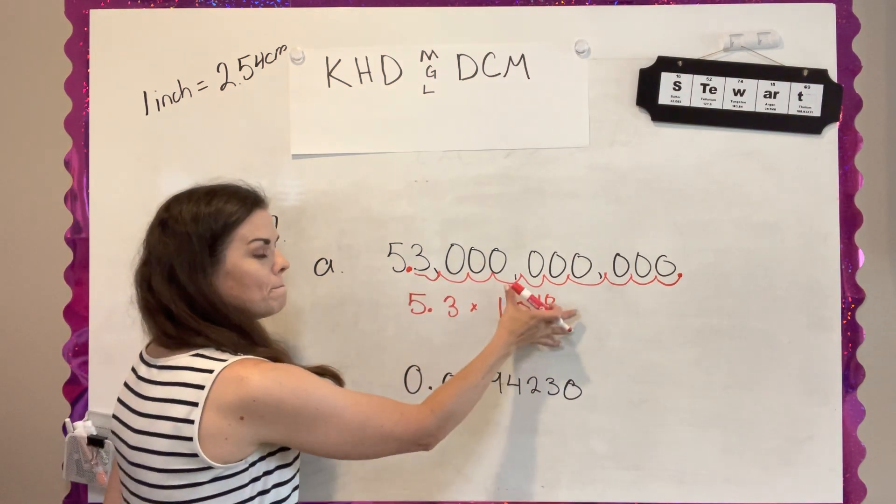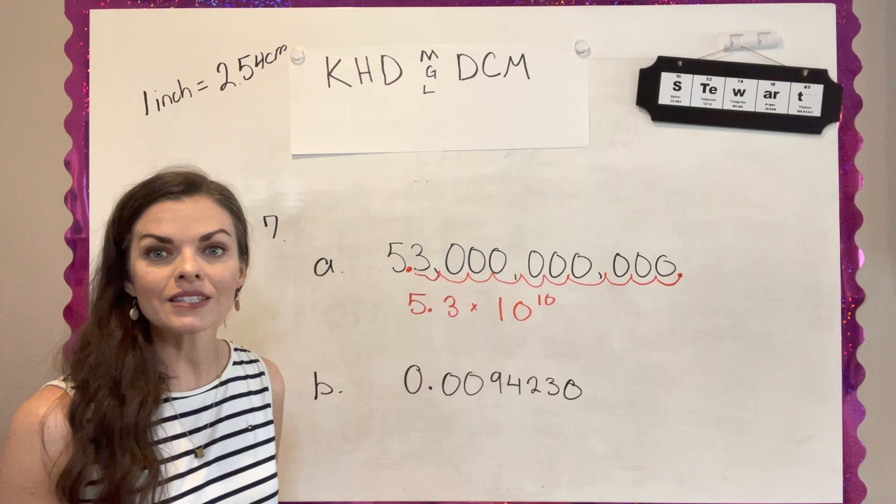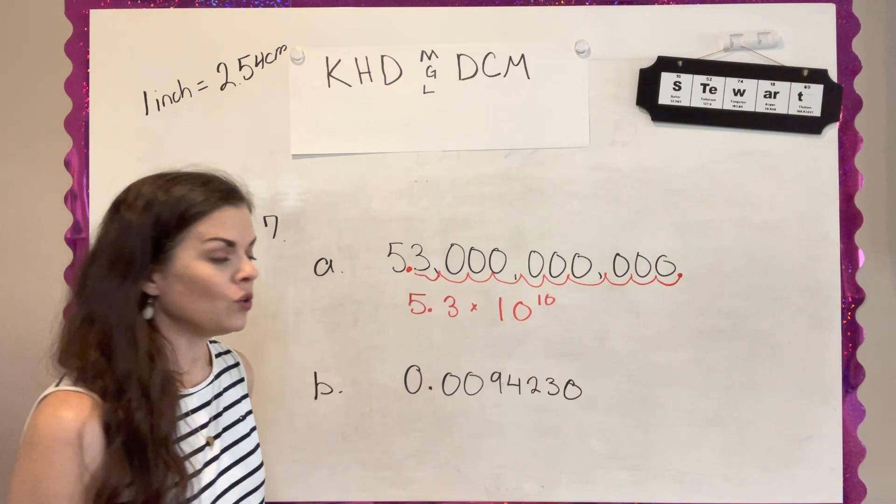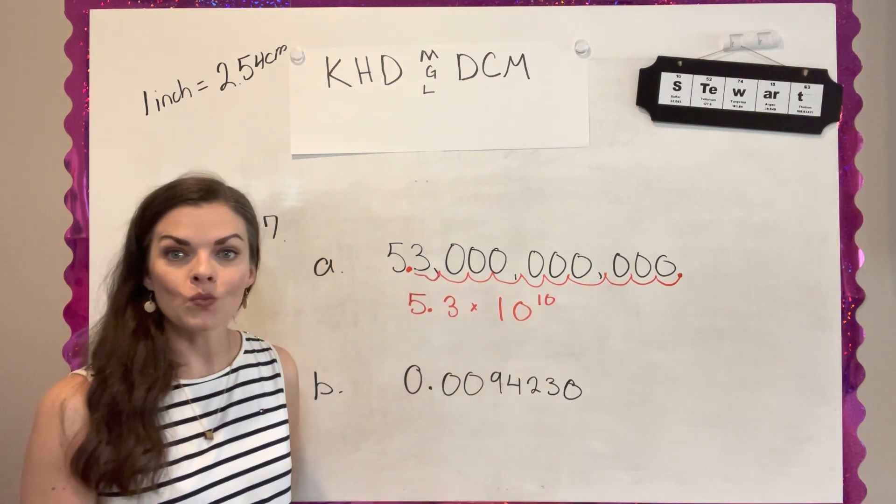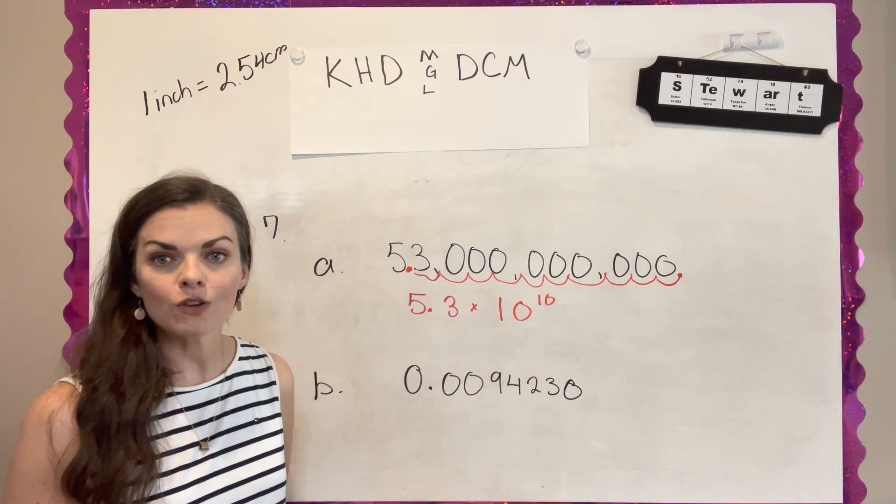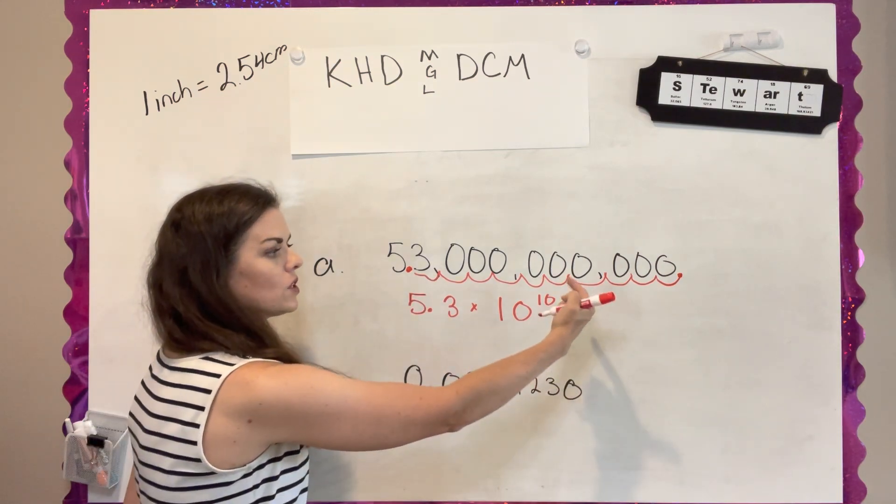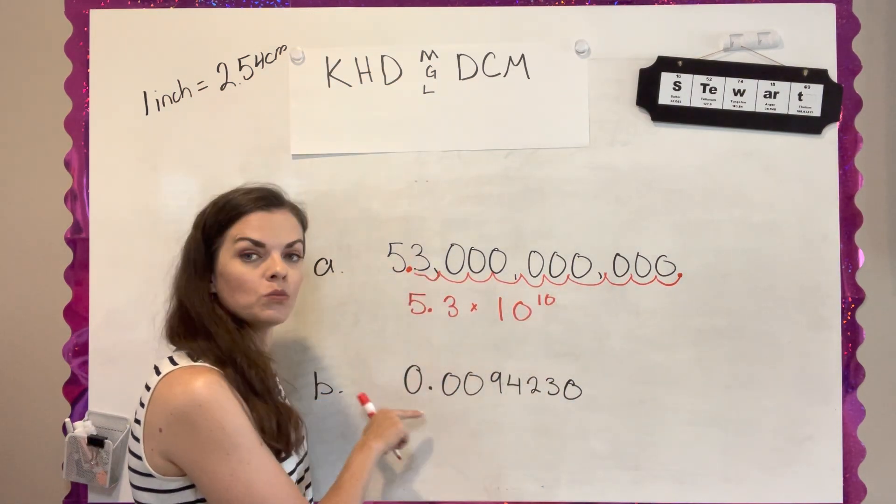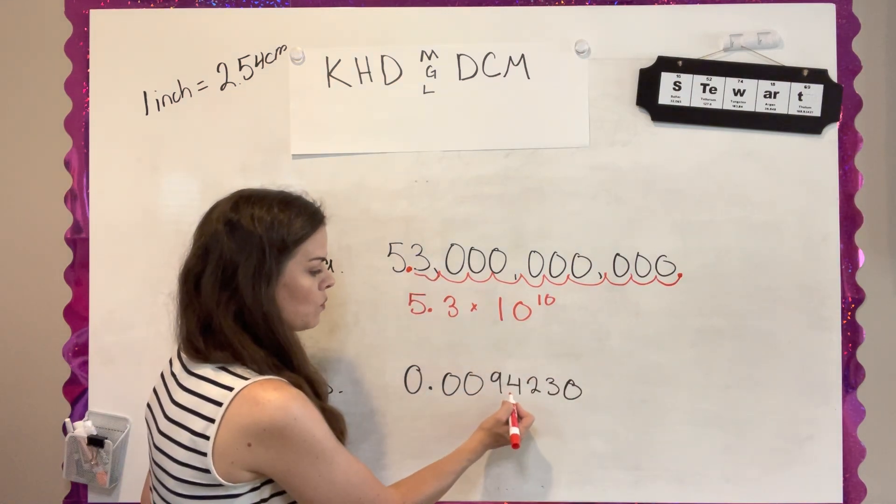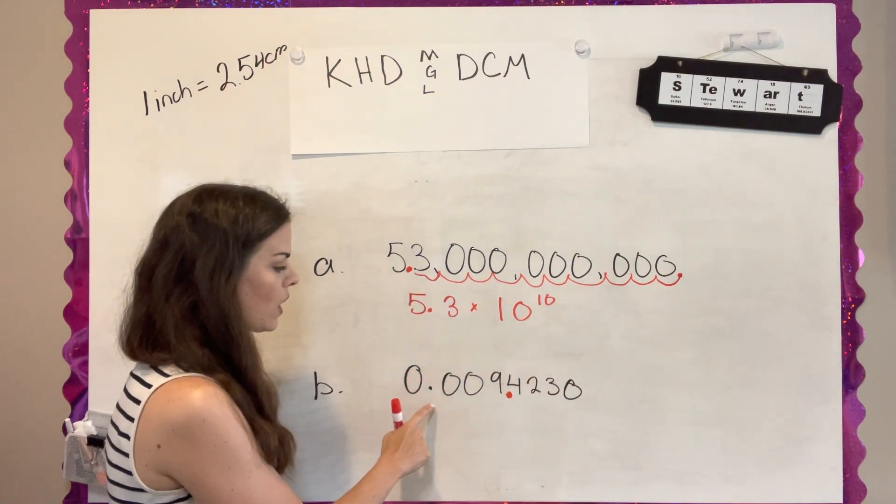Now this one is not a super big number. It's a really small number, but we can still put it in scientific notation. When you have a number that is less than one and you put it in scientific notation, your exponent is negative because you're moving your decimal in the other direction. So for this one, I moved my decimal this way. For this one, I'm moving it that way.